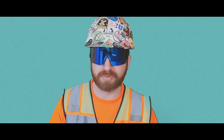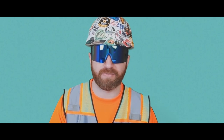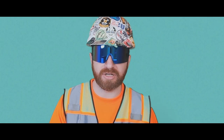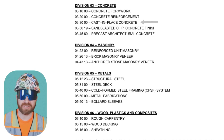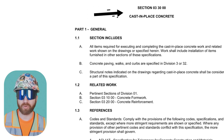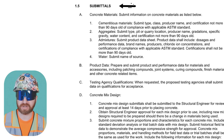Read your specification section first and understand all the requirements. There's usually some sort of software to transfer submittals back and forth between the contractor, other contractors, and the architect and engineer. Using the mix design submittal example, I'm going to navigate to the cast-in-place concrete spec section in the spec book.